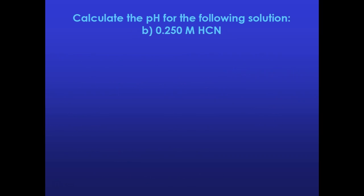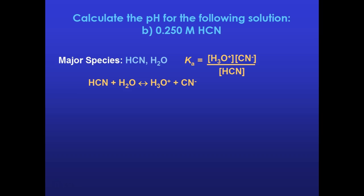I'm going to do this one more time for HCN. I'm going to do exactly the same thing. I see that HCN and water are my major species. I'm going to write the equation showing HCN combining with water to make hydrogen ions and cyanide ions. I can set up my K expression, products over reactants, and I can find the K value on my Ka-Kb chart, 4 times 10 to the negative 10. And this one's even smaller, so I would expect the pH is probably going to be higher because of how small that K value is.